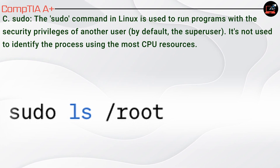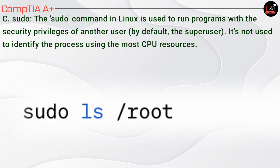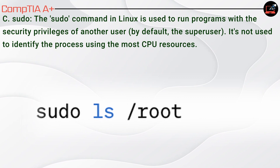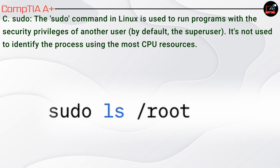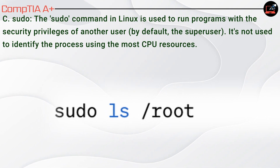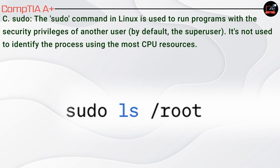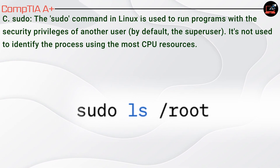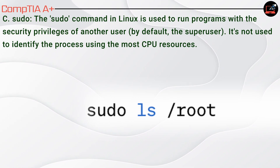C. sudo. The sudo command in Linux is used to run programs with the security privileges of another user — by default, the super user. It's not used to identify the process using the most CPU resources.